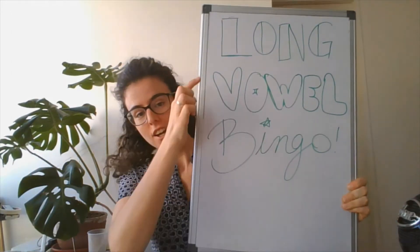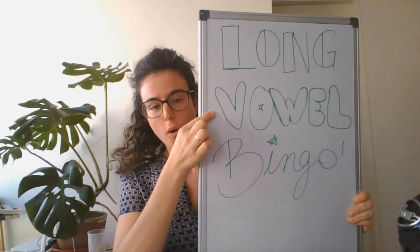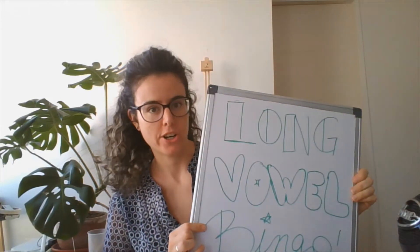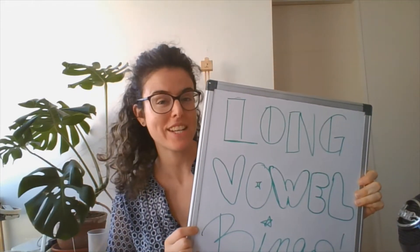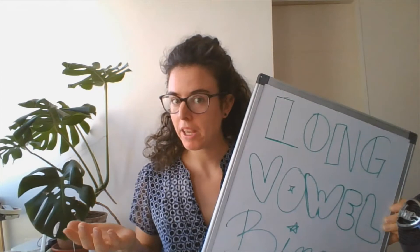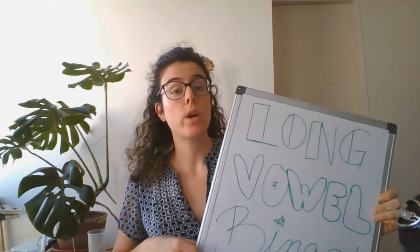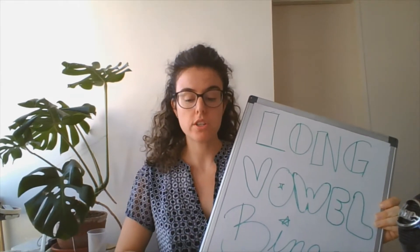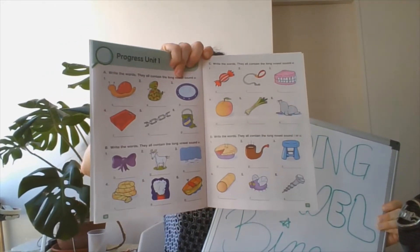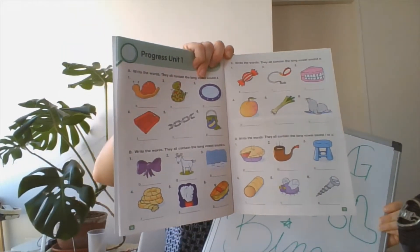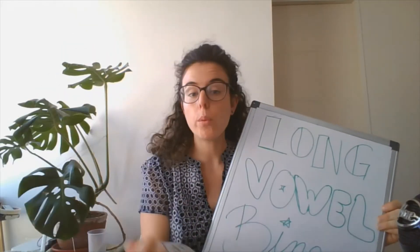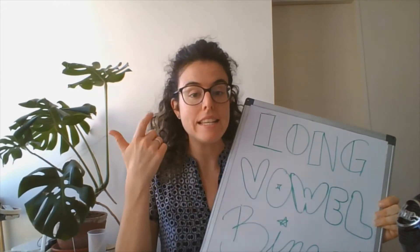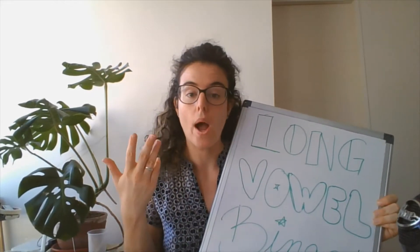Hey, Miss Chia's class. Alright, so are you ready for long vowel bingo? Did you finish your bingo sheet? We are playing bingo with the words that you find on these two pages of your spelling book. These words are all with the long vowel sound: A, E, I, O, and U.